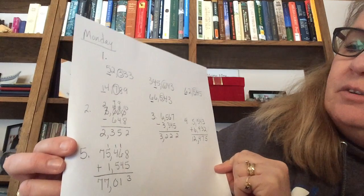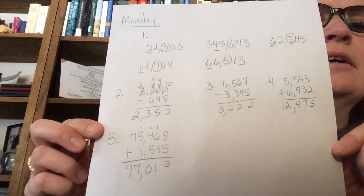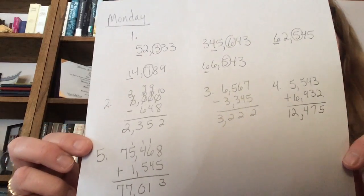On numbers 2 through 5, you either added or subtracted. So you can see those answers are there. Don't forget your commas and to line those up correctly.